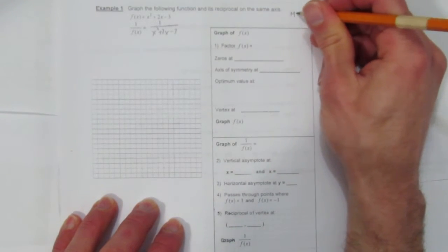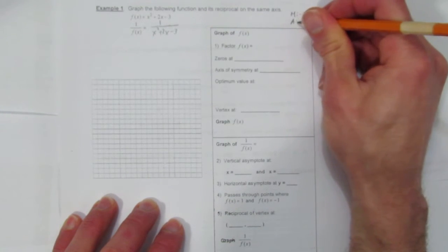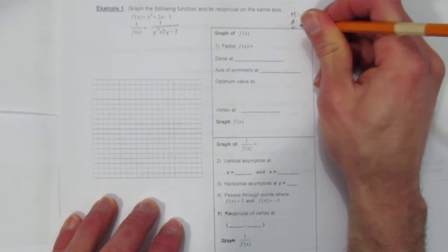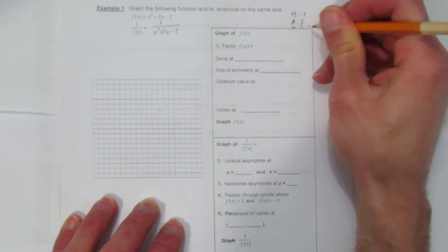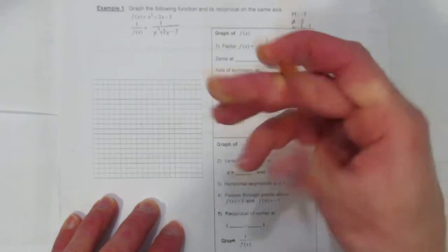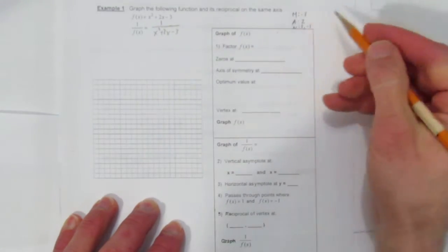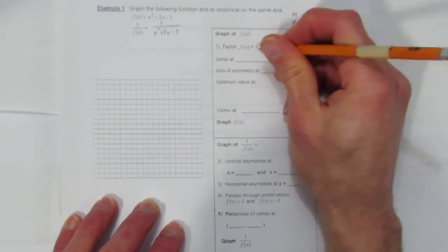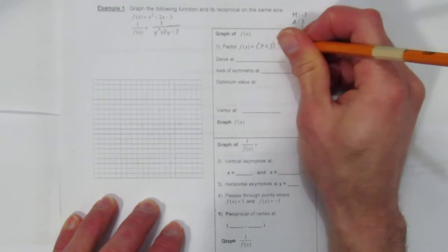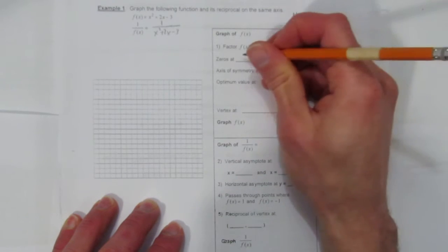You'll want to watch a video on factoring if you're not familiar with what I'm doing here, which is what multiplies to -3 and adds to 2. The numbers are 3 and -1. So when you factor f(x), it's not the reciprocal yet. It's just factoring this original equation.